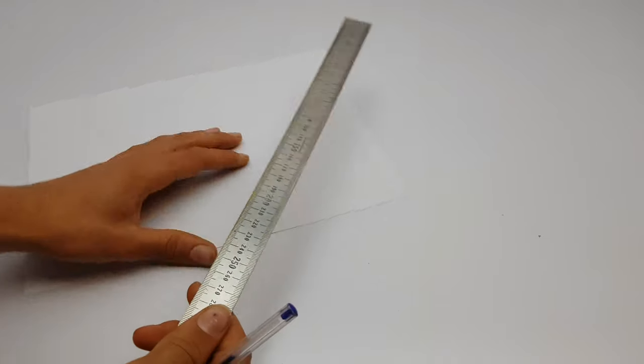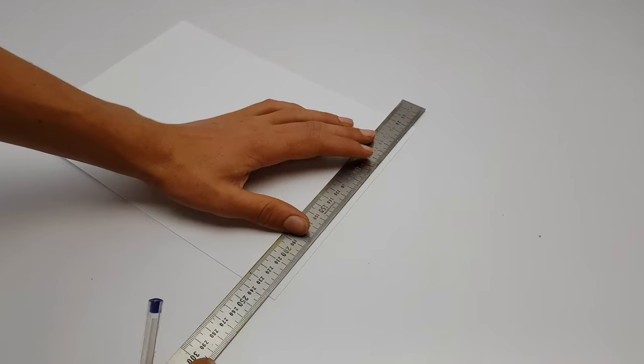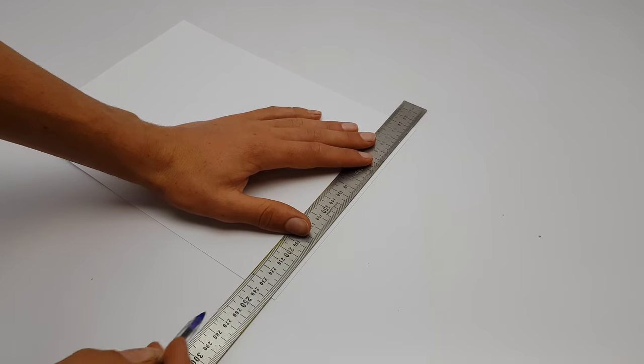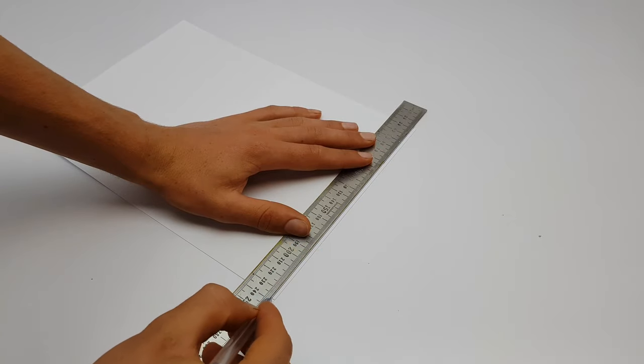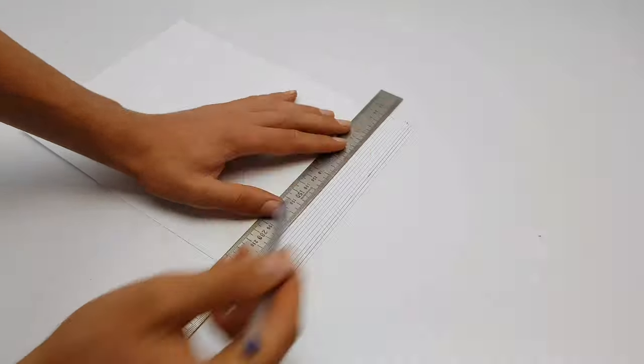To get started making the leaves of the aloe you will need a piece of paper, a pen, and a ruler to get perfect straight lines. Next you simply just need to draw lines about every two millimeters on the paper like this.